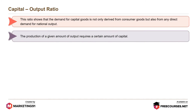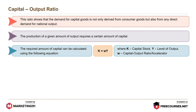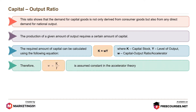The production of a given amount of output requires a certain amount of capital. The required amount of capital can be calculated using the equation K equals WY, where K is the capital stock, Y is the level of output, and W is the capital output ratio or the accelerator. W equals K divided by Y and is assumed constant in the accelerator theory.